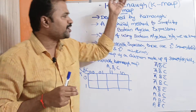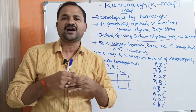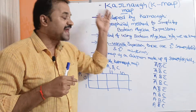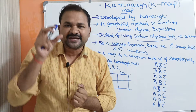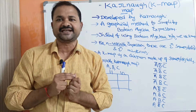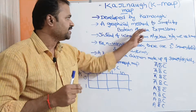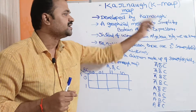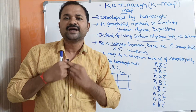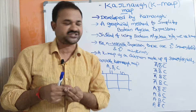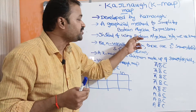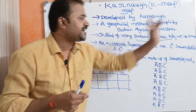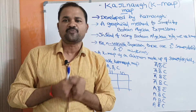Let us see what is the use of the Karnaugh map. It is a graphical method — a pictorial representation, a diagram — used in order to simplify Boolean algebra expressions. Instead of using Boolean algebra rules, we can use the Karnaugh map.